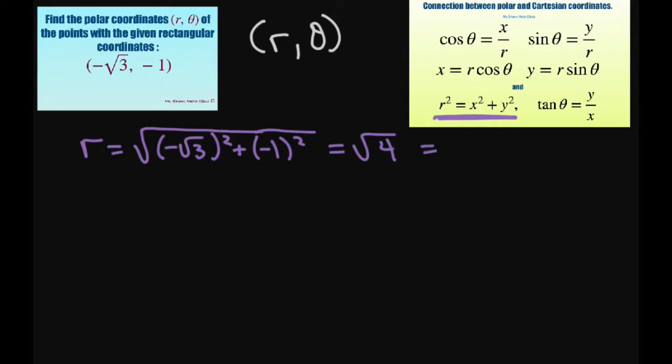Basically all we're looking for is r, theta, and we can use this formula here to get our r. So r is going to equal the square root of negative square root of 3 squared plus negative 1 squared. This equals the square root of 4, which equals 2. So we have that.